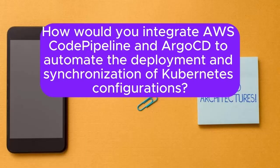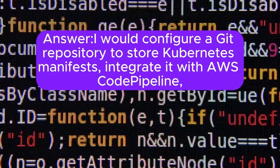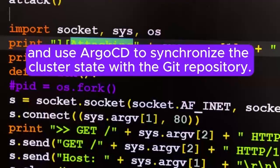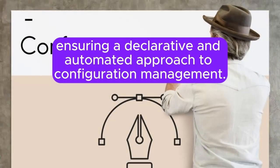Scenario 3: Your organization follows GitOps practices for Kubernetes configuration management. How would you integrate AWS CodePipeline and ArgoCD to automate the deployment and synchronization of Kubernetes configurations? Answer: I will configure a Git repository to store Kubernetes manifests, integrate it with AWS CodePipeline, and use ArgoCD to synchronize the cluster state with the Git repository. CodePipeline would trigger on changes to the Git repository, and ArgoCD would apply the changes to the Kubernetes cluster, ensuring a declarative and automated approach to configuration management.